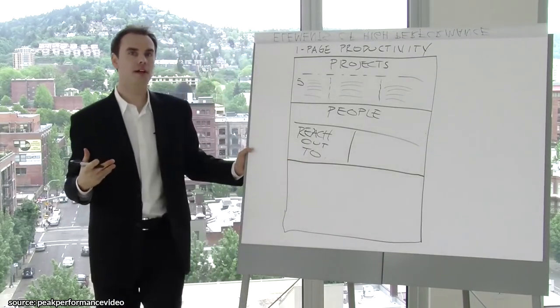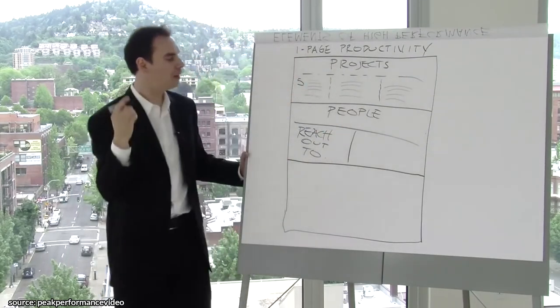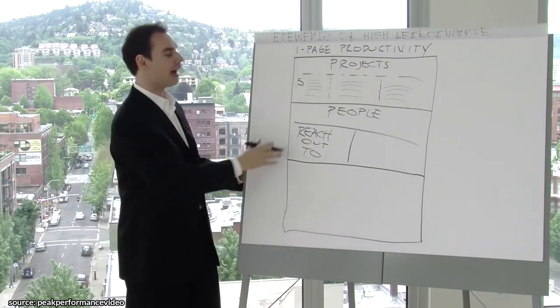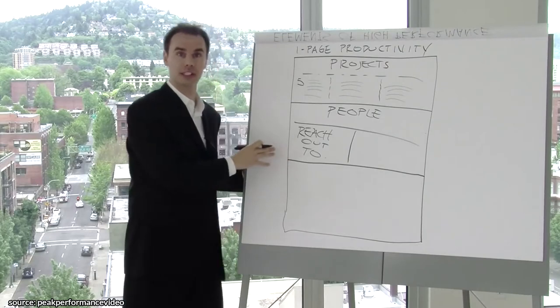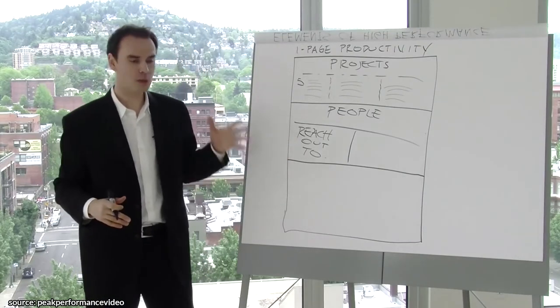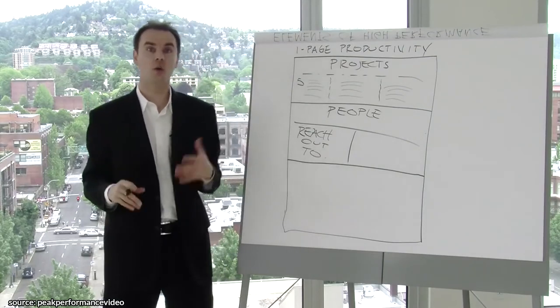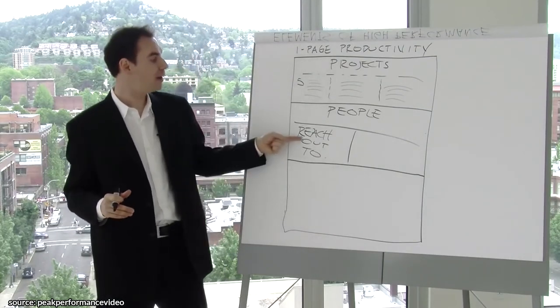One: who do you need to reach out to today? If I want to learn coding, I might want to schedule some time with a coder or web designer. This is important because most people when they open their inbox just start replying to things. When I open my inbox, the first thing I do is send out emails to people I need to reach out to.